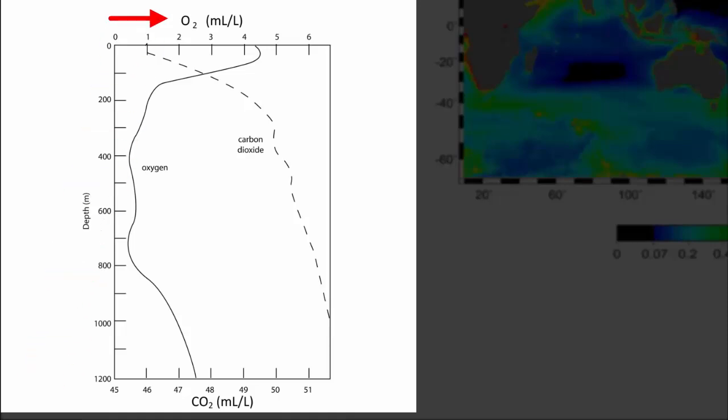The x-axis shows two scales. One on top, which refers to the oxygen graph, solid line, and one on the bottom, which refers to the carbon dioxide graph, dashed line. Both gas amounts are given in the same unit, milliliters per liter, a ratio of how much of the volume of a given amount of seawater comes from each gas, with values increasing to the right.